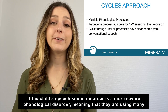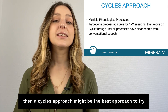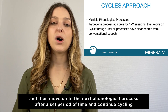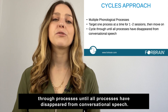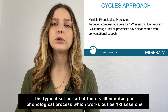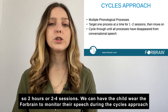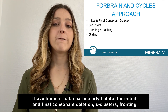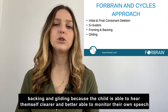If the child's speech sound disorder is a more severe phonological disorder, meaning they're using many phonological processes in their speech and are hard to understand because of this, then a cycles approach might be the best approach to try. This is where we target one phonological process at a time for a set period of time and then move on to the next, continuing to cycle through all the processes until they have disappeared from conversational speech. The typical set period of time is 60 minutes per phonological process, which works out as one to two sessions — or double that if the child has a cognitive impairment. We can have the child wear the Forebrain during the cycles approach, and I've found it particularly helpful for initial and final consonant deletion, S clusters, fronting, backing, and gliding, because the child is able to hear themselves clearer and better monitor their own speech.